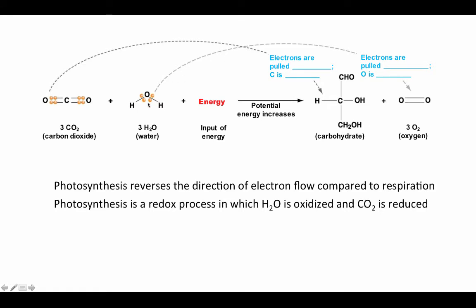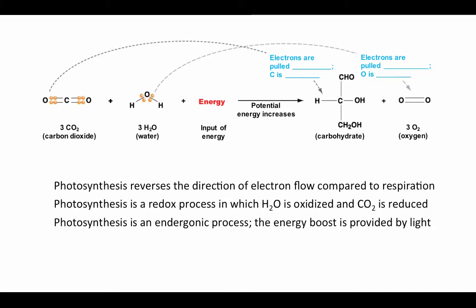Conversely, oxygen goes from having a very large share of electrons in the form of water to molecular oxygen, which is nonpolar — those electrons are equally shared. So electrons are pulled away from oxygen, and oxygen is oxidized. Water is oxidized to oxygen; carbon dioxide is reduced to a sugar. Just as cellular respiration was an exergonic process, reversing it gives an endergonic process that requires energy — and in the case of photosynthesis, that energy comes from electromagnetic radiation from the sun.